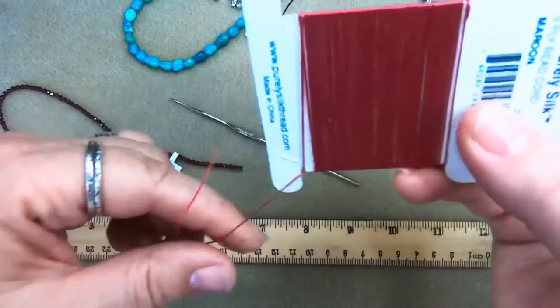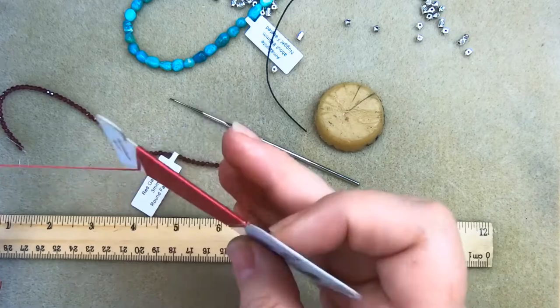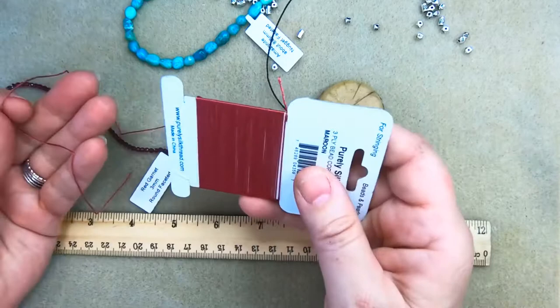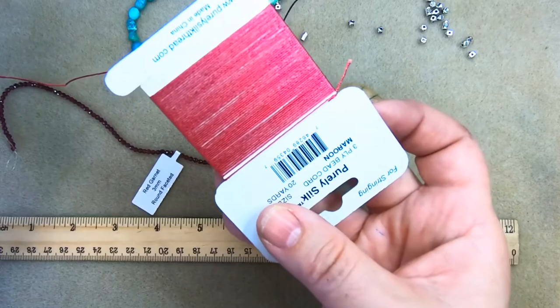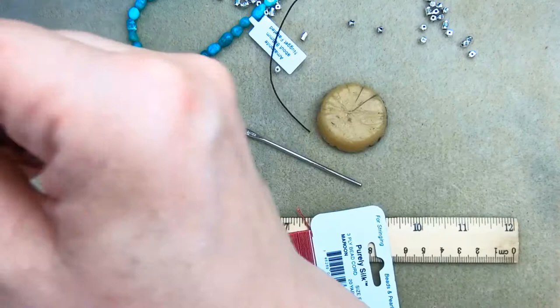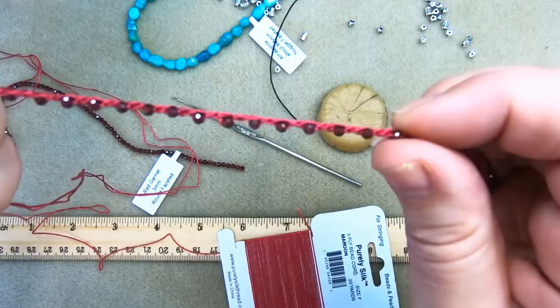I take my silk, this is size F silk, so it's a little bit heavier than the real thin stuff. For a regular 16 to 18 inch necklace, I measure off three yards. Since I want to use this doubled because I like this thicker look, singly you need three yards, doubled you need six yards.